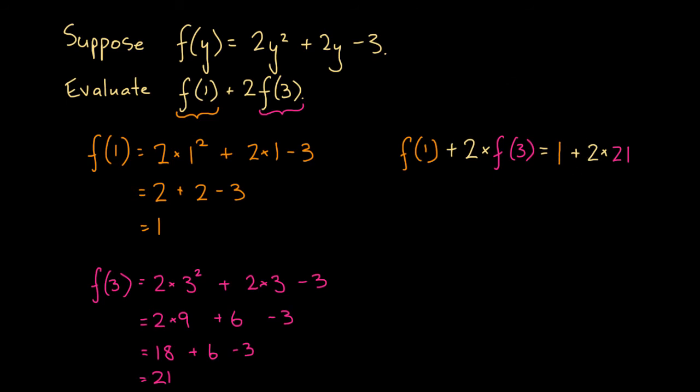So this expression equals this expression, and we can simplify this. This is going to be the same as 1 plus 2 times 21. 2 times 21 is 42. So 1 plus 42, which is 43. So our final answer is 43.